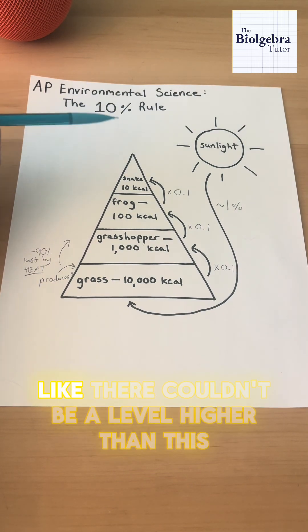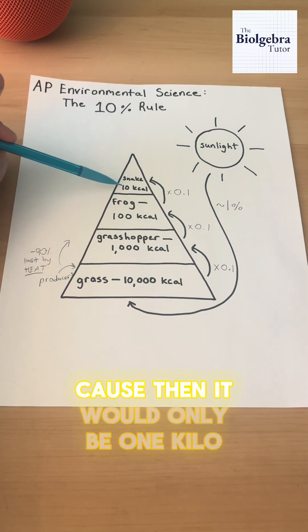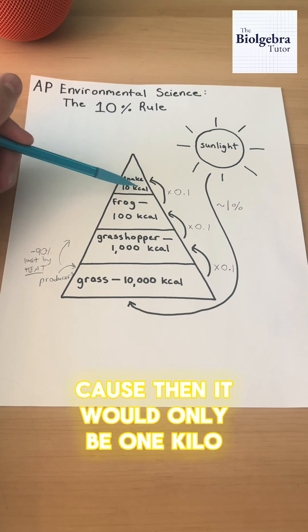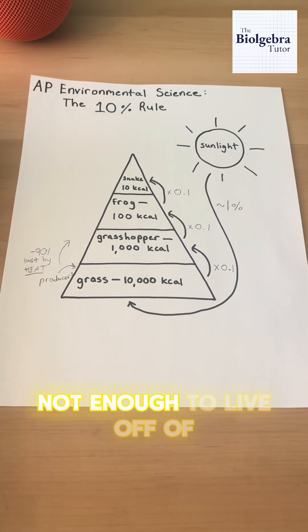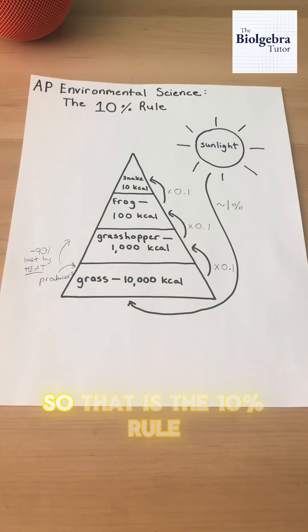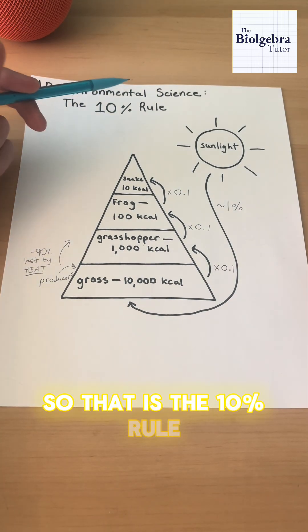There couldn't be a level higher than the top predator, because then it would only be one kilocalorie, which is basically nothing — not enough to live off of. So that is the 10% rule.